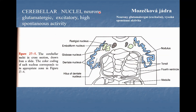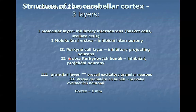Cerebellar nuclei contain neurons. The majority are glutamatergic excitatory neurons, typical for their high spontaneous activity. In addition to glutamatergic neurons, there are also inhibitory interneurons, though their number is much smaller in comparison with the excitatory glutamatergic neurons.